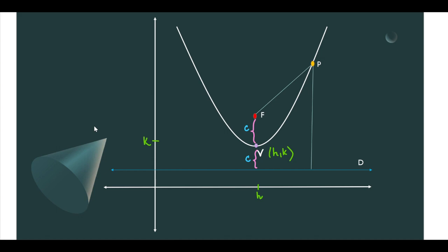How do we get the coordinates of our point F, or our focus? Notice that if this is K here, and we know that this is distance C, therefore this Y-coordinate here would give us K plus C. And the Y-intercept of our directrix would give us K minus C.